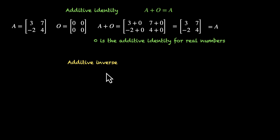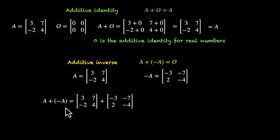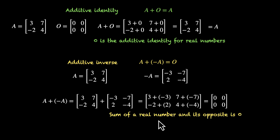Additive inverse: for any matrix A, we have its opposite, its negative, that's minus A. If you add these two, you get the zero matrix. Starting with A = [3, 7, -2, 4], the negative matrix -A is [-3, -7, 2, -4]. Adding A plus (-A) gives: 3+(-3), 7+(-7), -2+2, and 4+(-4). At this step, real number properties come into play: a number plus its negative equals zero. So all elements become zero, giving the zero matrix. The sum of a real number and its opposite is zero — this is why the additive inverse property holds for matrices.